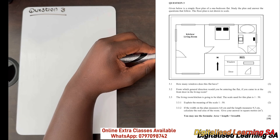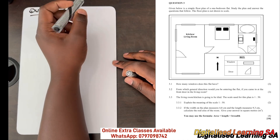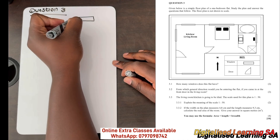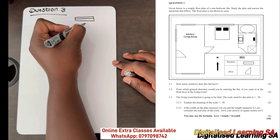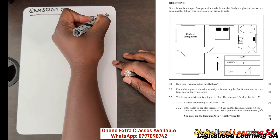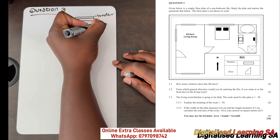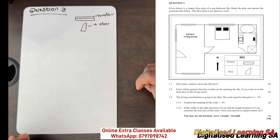The bedroom also has a bathroom inside, as we can see on the plan. We are also given two keys: a window is represented by something like this, and a door is represented by something like this. So this represents a window and this represents a door.